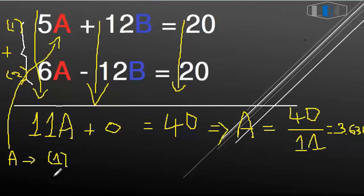So we start: 5 times, open bracket, 3.636 plus 12B equals 20.